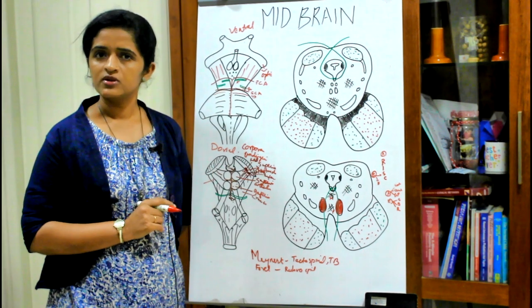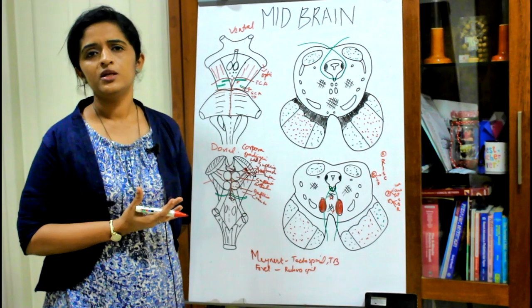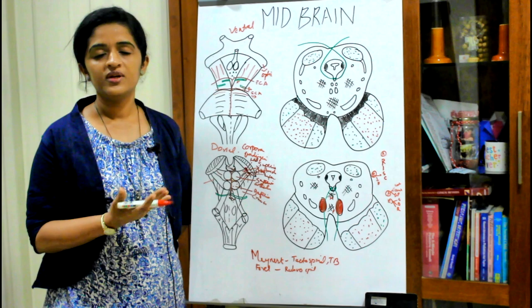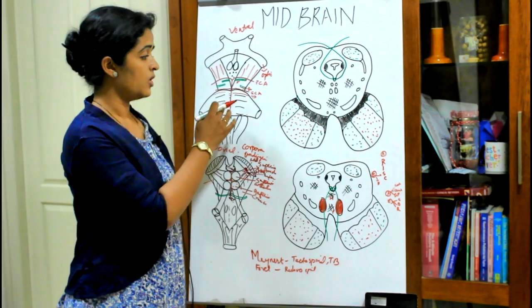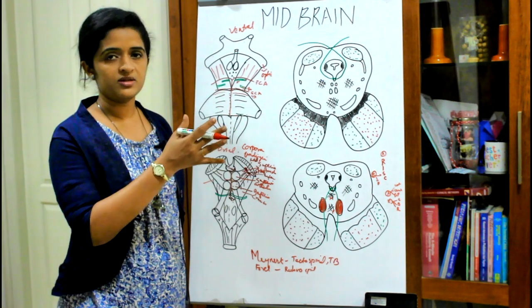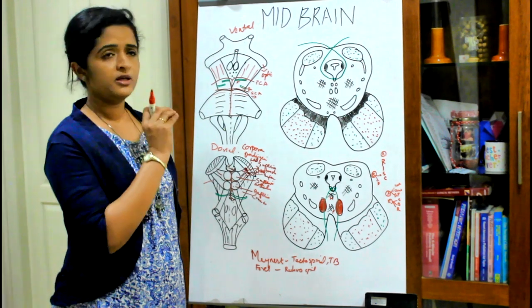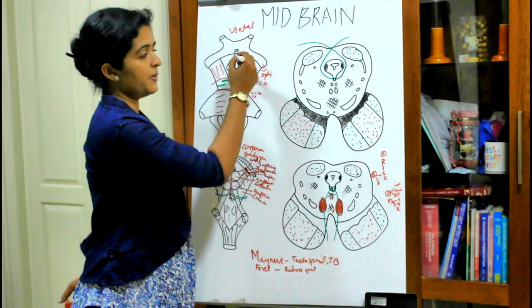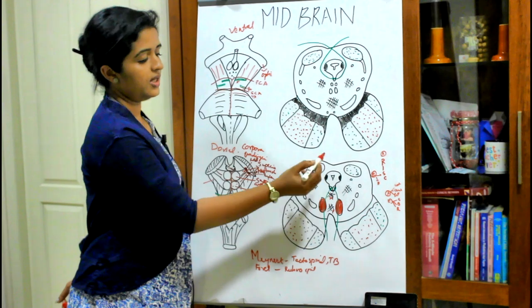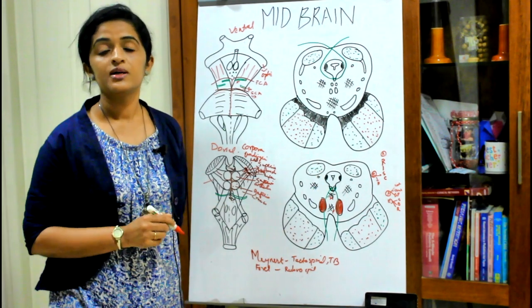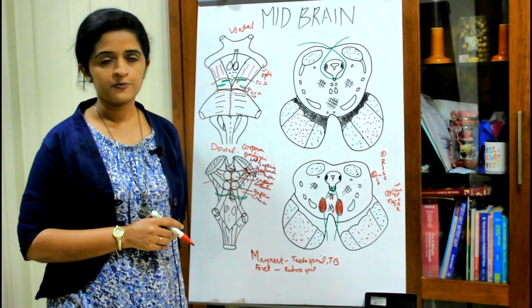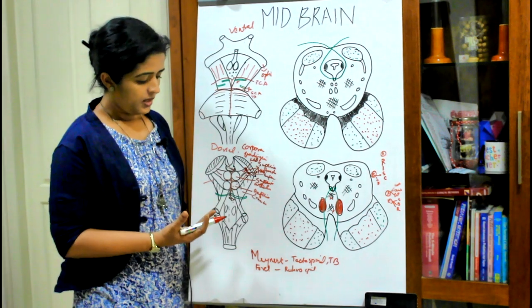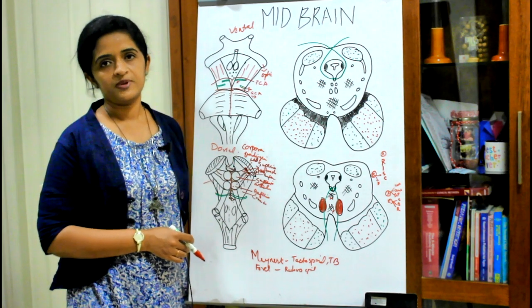Every part of the brain has a cavity inside it. The cerebral cortex has the lateral ventricle, the space between the two thalami gives the third ventricle, and the space between the pons and medulla on one side and the cerebellum on the other gives the fourth ventricle. In the midbrain, there is a connecting duct linking the third ventricle to the fourth ventricle. This duct passing through the midbrain is known as the aqueduct of Sylvius or cerebral aqueduct.